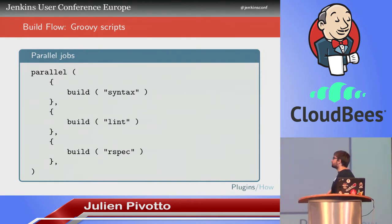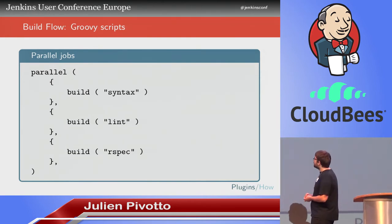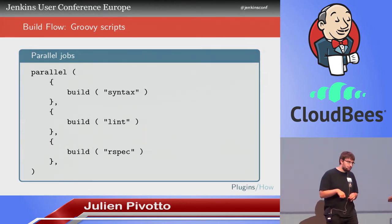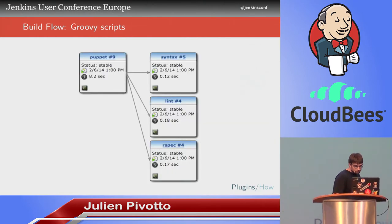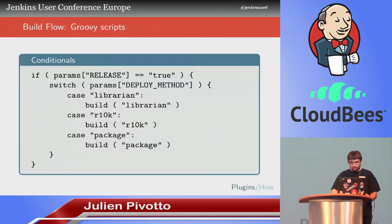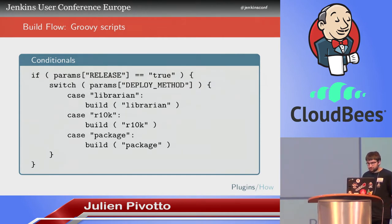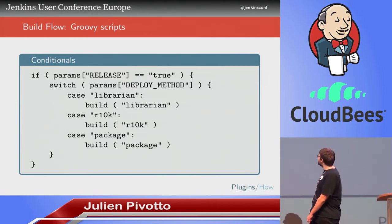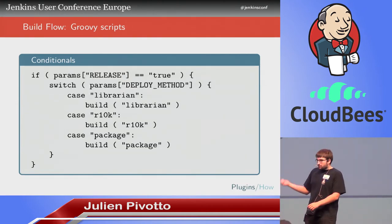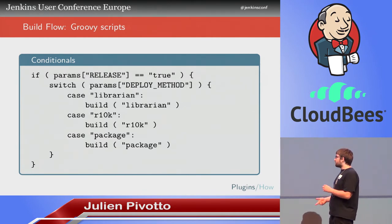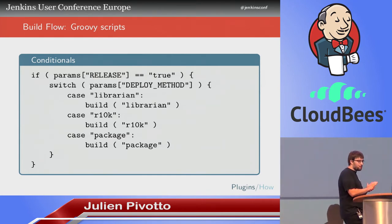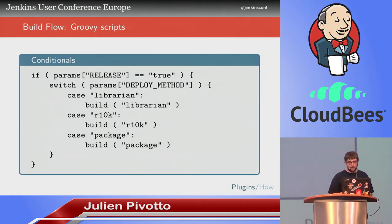You also have a function to run parallel jobs: in parallel I will build the syntax job, the lint job, the rspec job. You also have conditionals — if I want to release it, it will deploy using the deploy method parameter, but if I want to release with librarian-puppet, then I will start the build librarian job. If I want to do a package, then it will start the package job. That's an example of a pipeline, and you can also pass build parameters — I will start the get-modules job and pass my name parameter and my environment parameter.